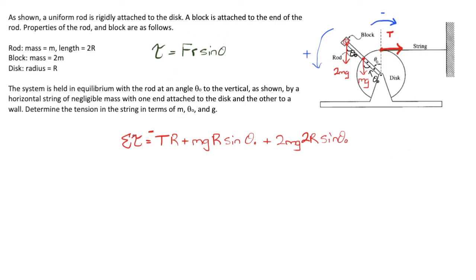Now of course all of these torques must sum to 0 because they told me that the system is being held in equilibrium. 0 equals negative TR plus mgR sine theta naught plus 2mg times 2R sine theta naught. I guess at this point I could put 4mgR sine theta naught.